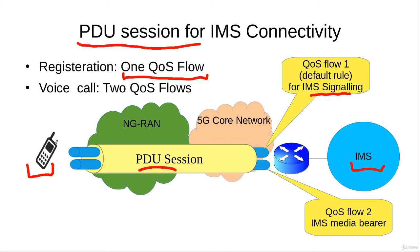Now suppose this user equipment wants to generate a call. It would need two quality of service flows. The first would be the default QoS flow, used for IMS signaling to establish and maintain the voice call. The actual packets of the voice would be carried on the second QoS flow, which is also called the IMS media bearer.